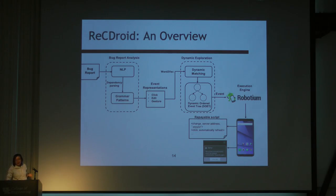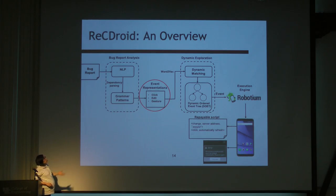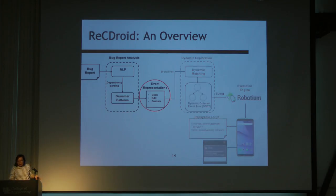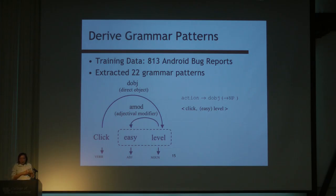Now let's look at the detailed approach. The tool has two major phases: bug report analysis and dynamic exploration. In the analysis phase, it uses dependency parsing techniques from natural language processing to extract hidden representations. In the second phase, guided by these hidden representations, it systematically explores a path sequence to reproduce the crash. The key data structure we use is called a dynamic order tree.